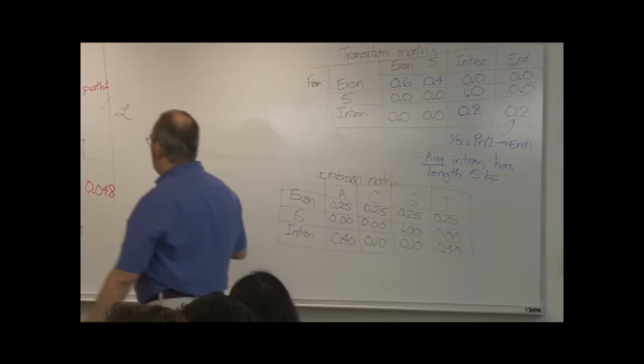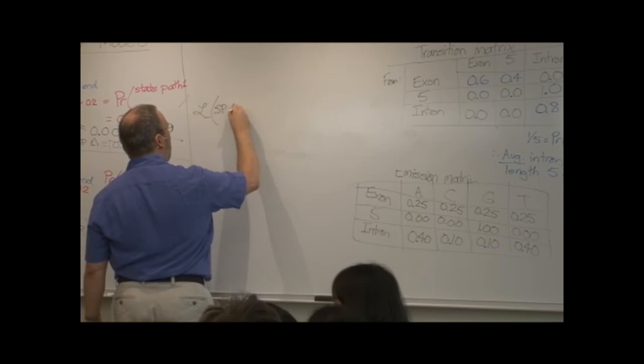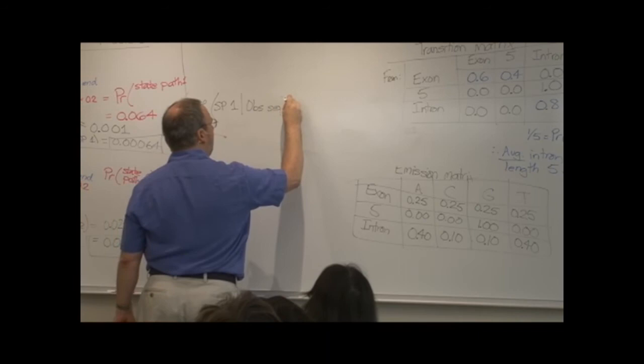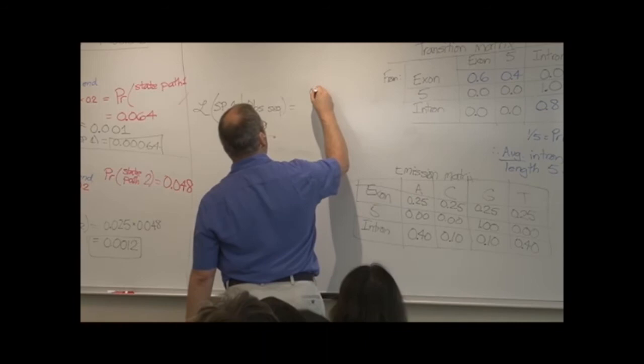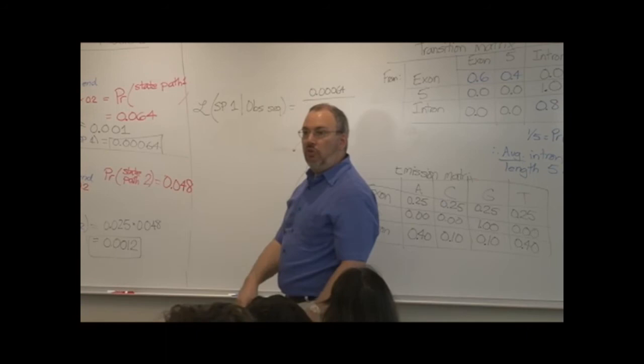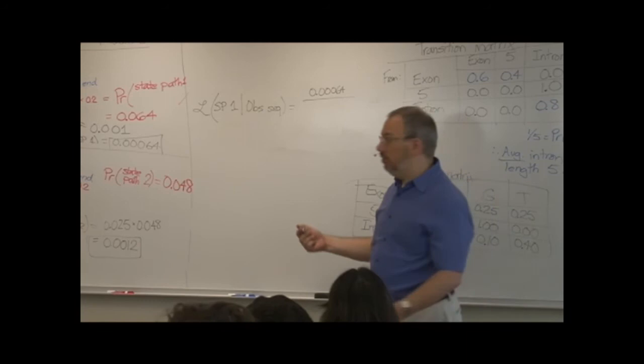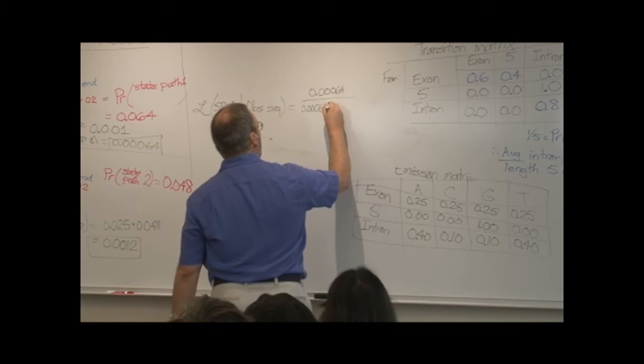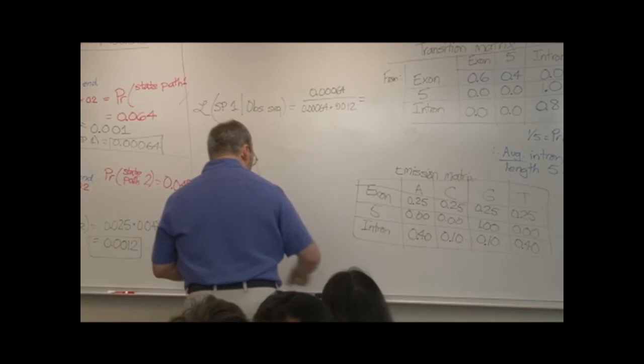In like manner, once we know that the observed sequence was in fact observed, we can renormalize these probabilities. Those of you who know about Bayesian probability, we're applying Bayes' theorem here, to determine the likelihood of state path one given the observed sequence. And that's going to be this probability divided by the sum of these two. So that after this normalization process, the two will add up to one.